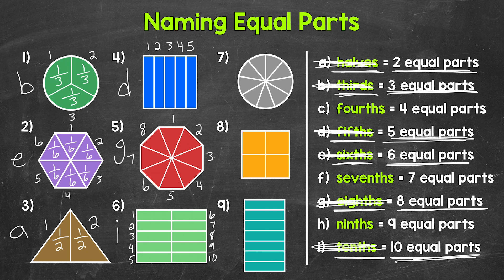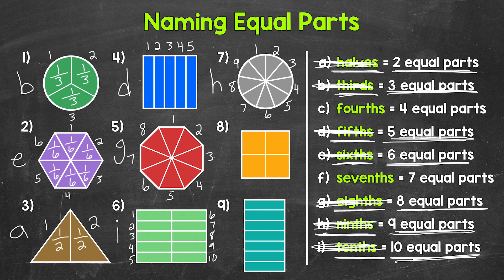Taking a look at number seven. Now we have a circle — that's our whole — and this circle has been divided into one, two, three, four, five, six, seven, eight, nine equal parts. Nine equal parts we call ninths. So let's put an H next to number seven and cross off ninths. Each one of those equal parts is one ninth of the whole circle.